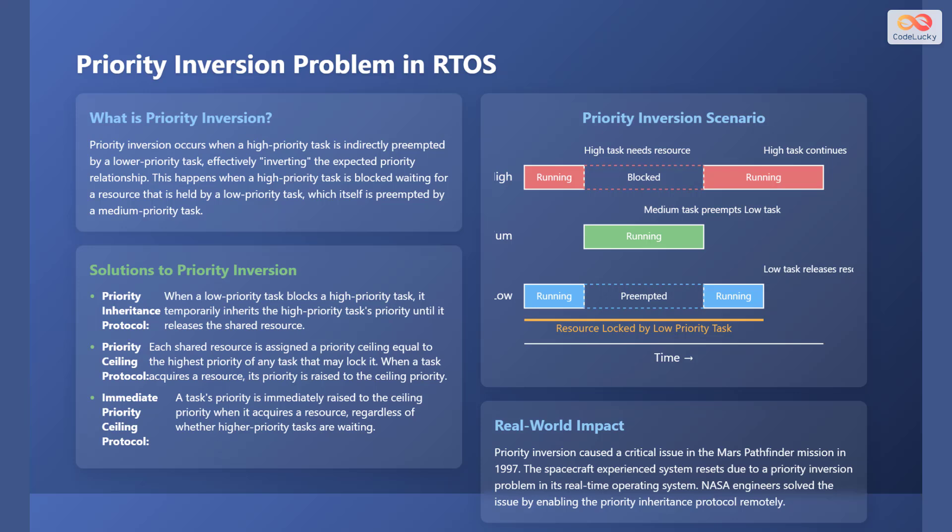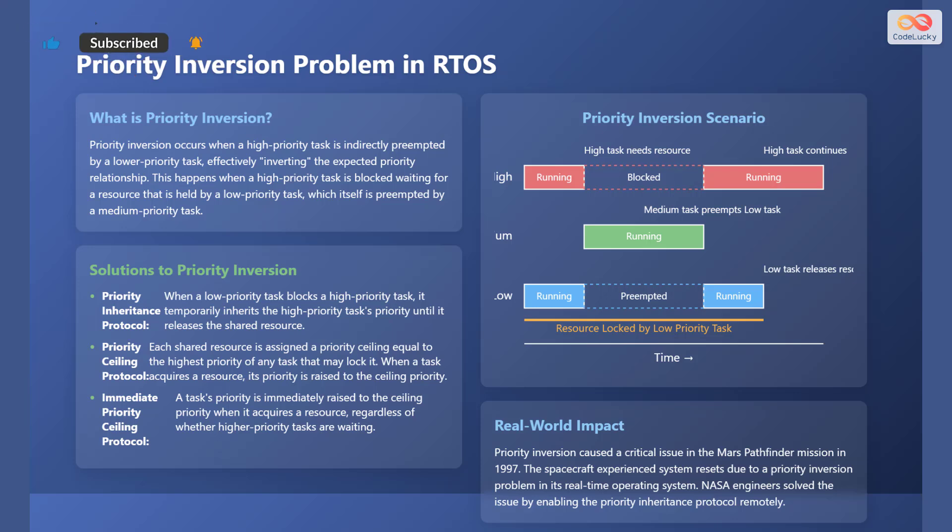The next solution is the priority ceiling protocol: each shared resource is assigned a priority ceiling equal to the highest priority of any task that may lock it, and when a task acquires a resource, its priority is raised to the ceiling priority. The final solution is the immediate priority ceiling protocol, where a task's priority is immediately raised to the ceiling priority when it acquires a resource, regardless of whether higher priority tasks are waiting. A real-world example is the Mars Pathfinder mission in 1997, where the spacecraft experienced system resets due to a priority inversion problem in its RTOS — NASA engineers solved the issue by enabling the priority inheritance protocol remotely.